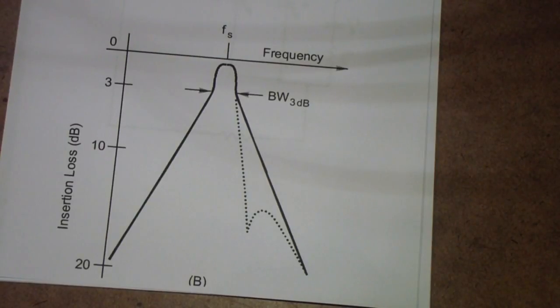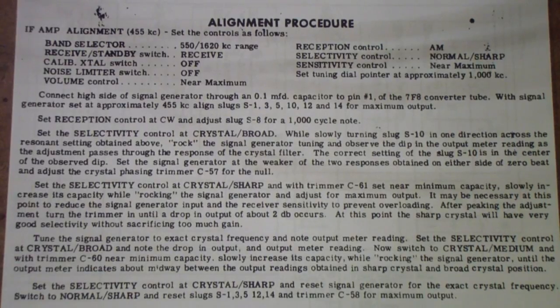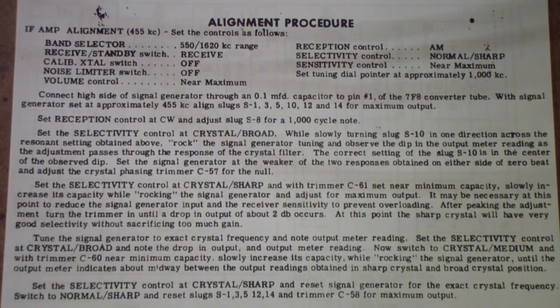So, let's talk first about the Halicrafters itself, and then we'll return to the circuit. Here are the alignment instructions for the IF, or intermediate frequency. The part we're going to be referring to is this step and this step. I will call this step the broad crystal adjustment, and this step the sharp crystal adjustment.